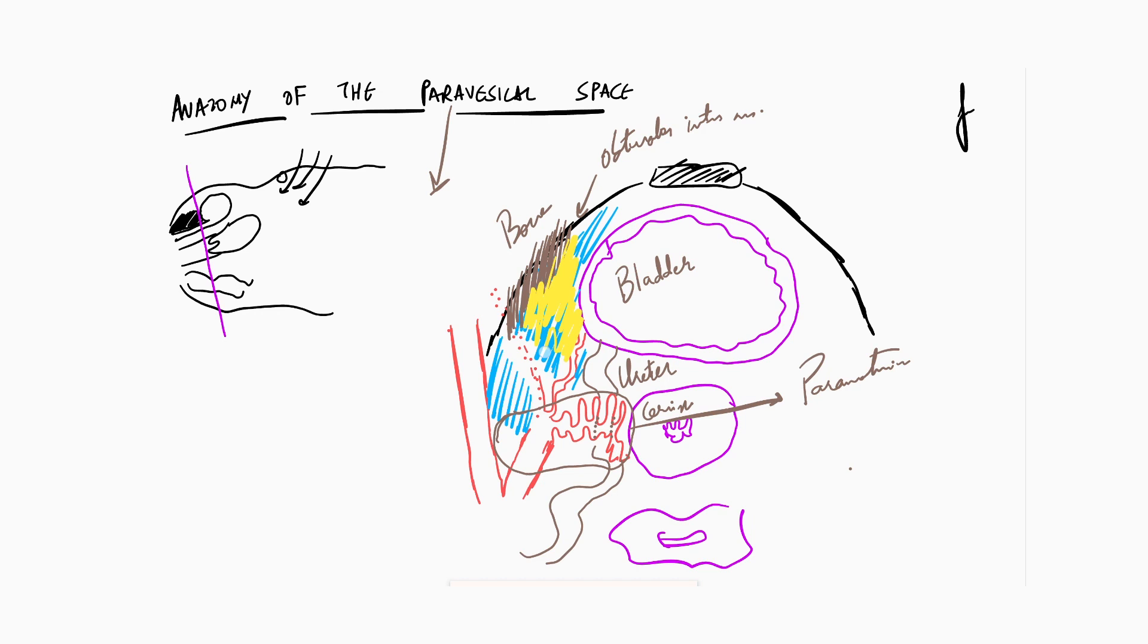This is something which we label as a potential space. What do you mean by a potential space? A potential space is a space which can be opened up but which is naturally not open. This entire yellow colored thing which I have drawn is nothing else but endopelvic fascia.